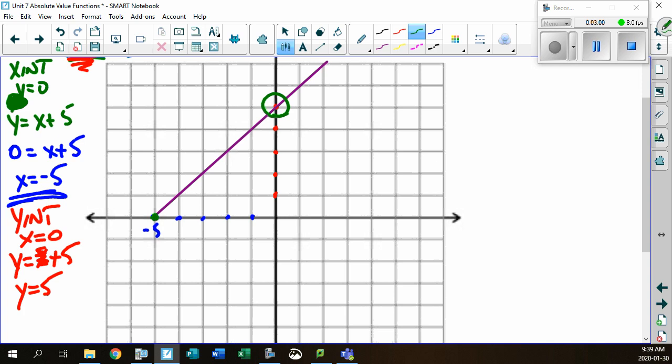Starting from this point that you know it's going to bounce, count. 1, 2, 3, 4, 5. Now, count in the opposite direction. 1, 2, 3, 4, 5. And now, that's got to have a sister point. And look at this. Count. 1, 2, 3, 4, 5. There's my sister point right there.